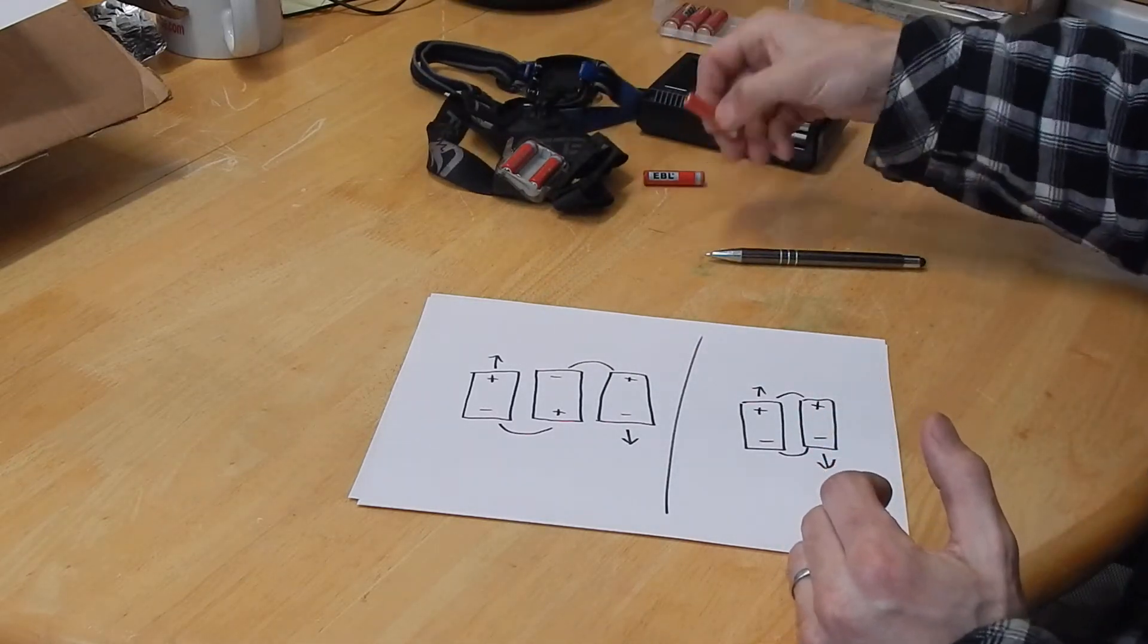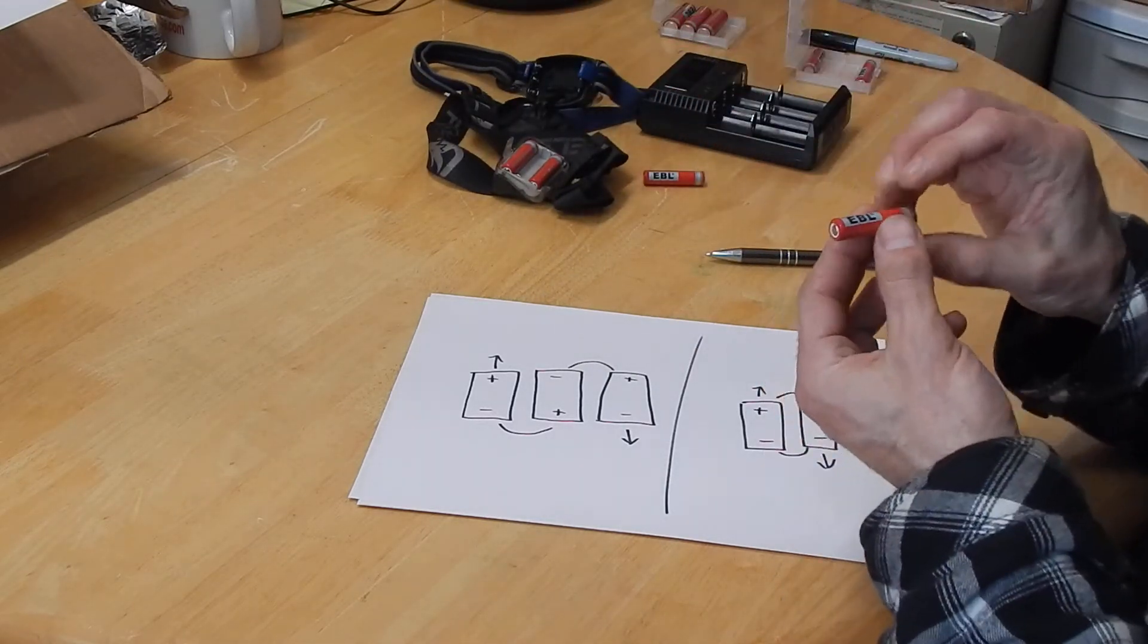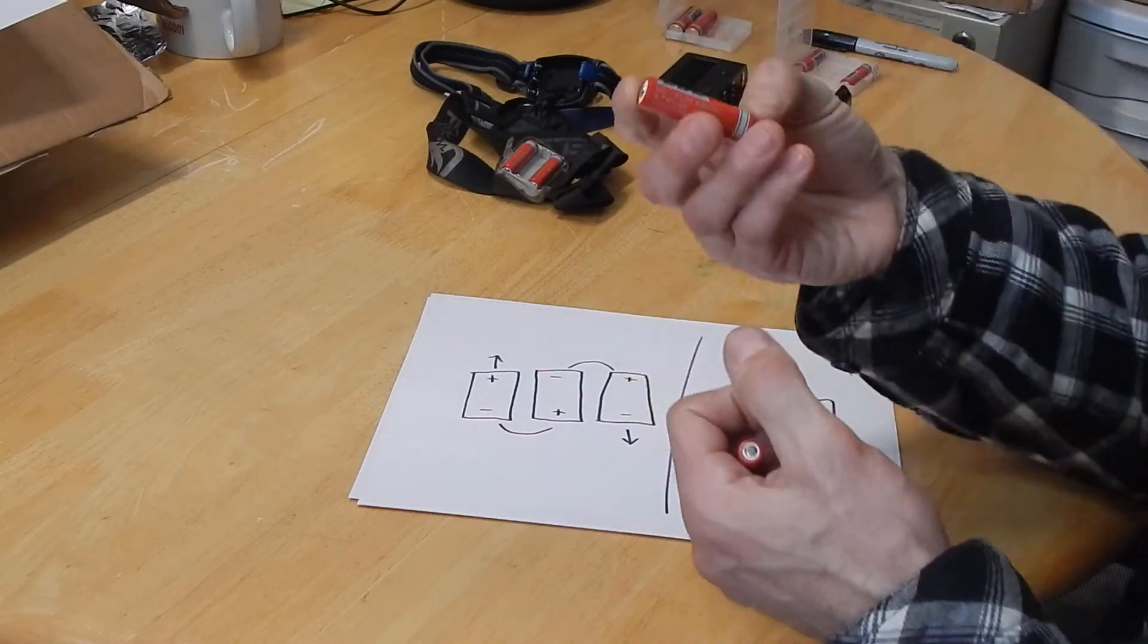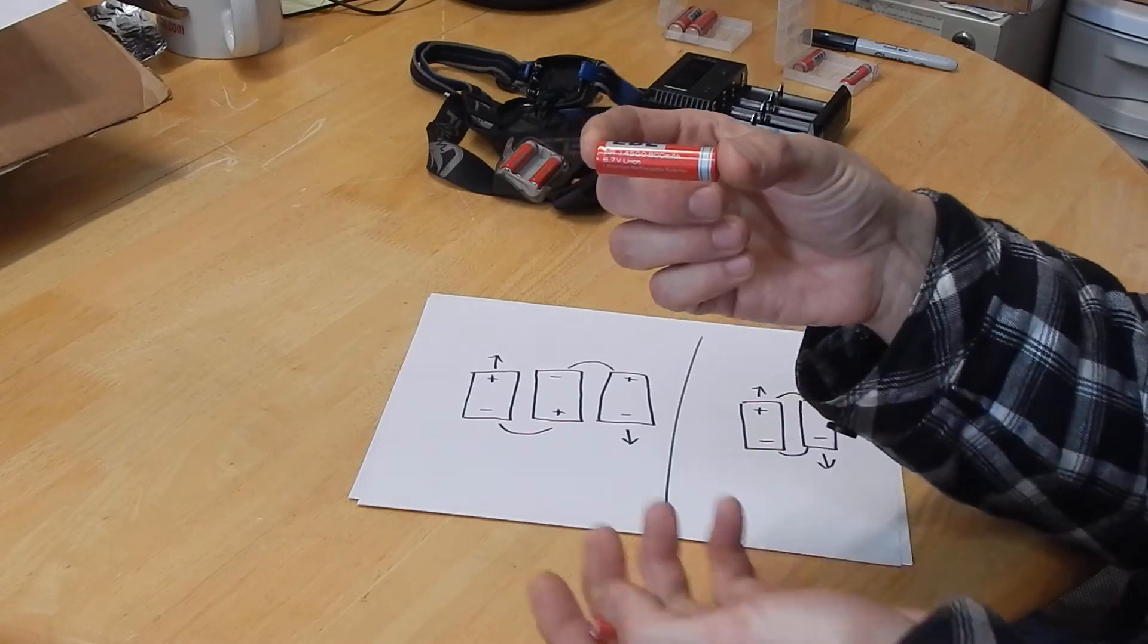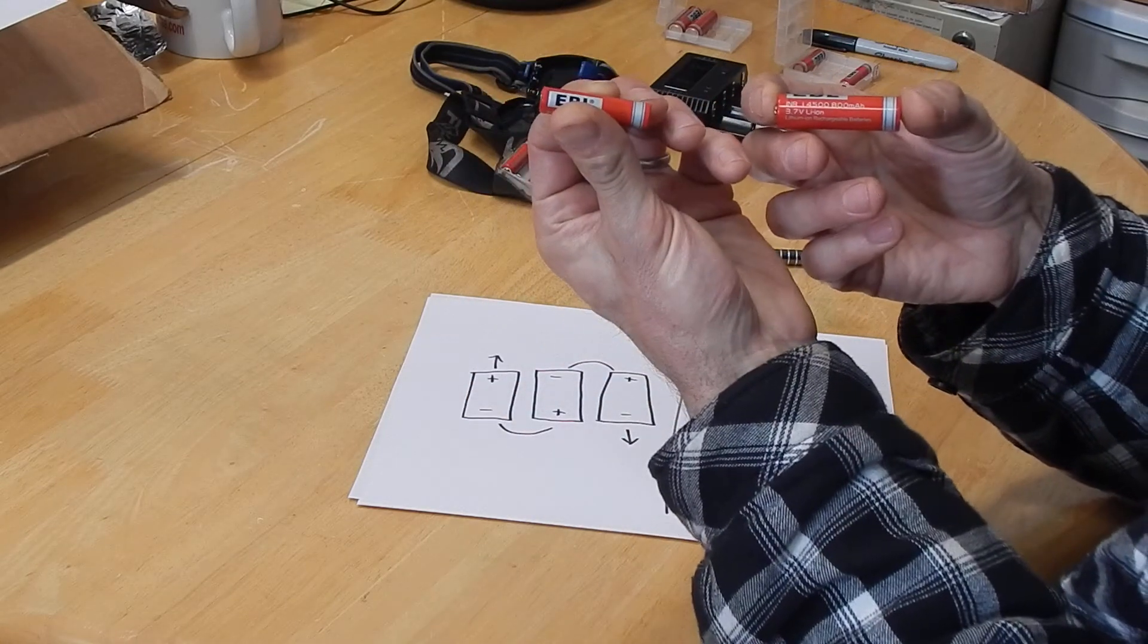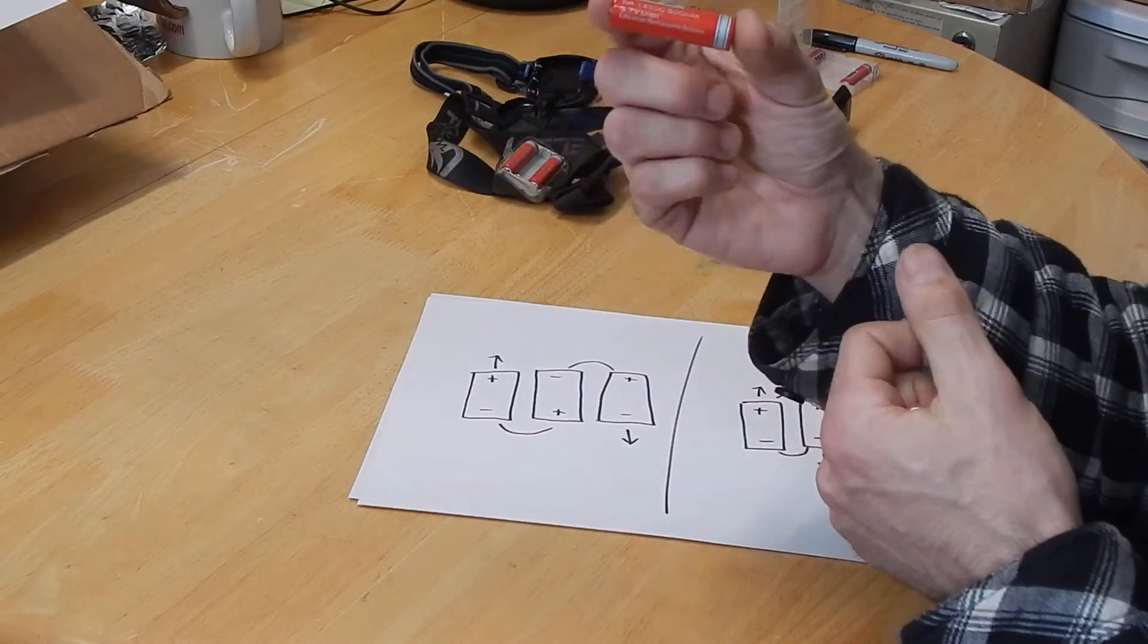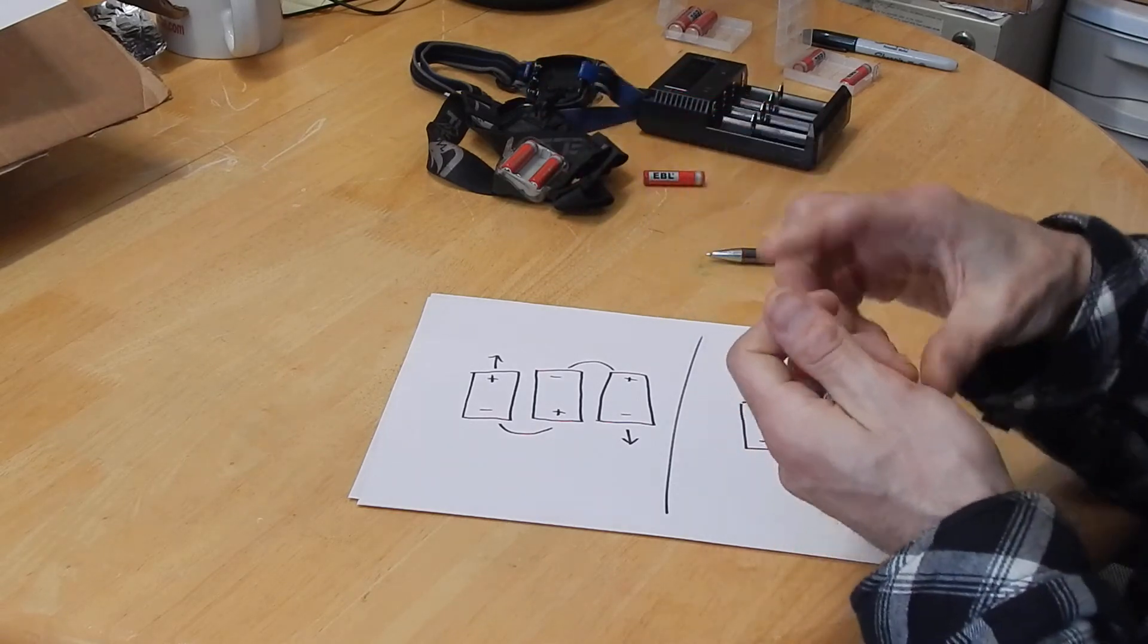I definitely recommend these EVL batteries. You can get, for example, four of the 14500s, which is the AA size. These are the 10440s. You can get four of these and a very high quality charger for like 20 bucks on Amazon.